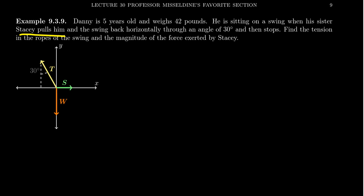And then the tension of the rope is going to form a 30 degree angle with the vertical right there. And she's holding them there. And so you have these three vectors, S, W and T. And the fact that the swing isn't moving means they're in a state of static equilibrium. The sum of the three vectors is equal to zero. So we take W plus S plus T. This is equal to zero.